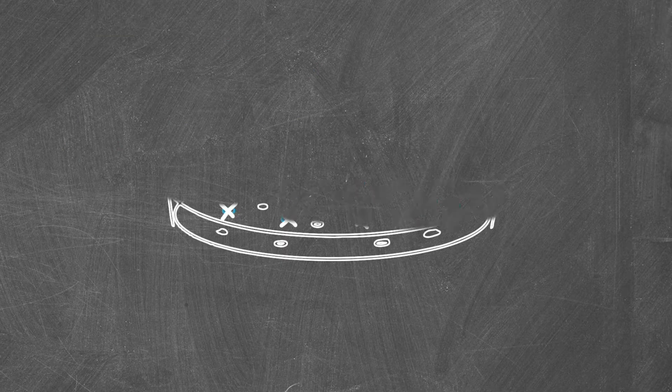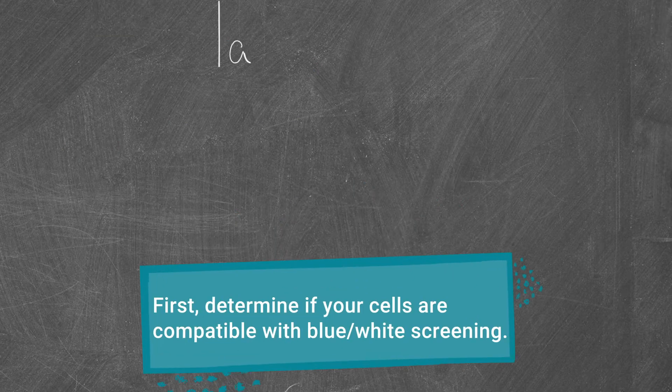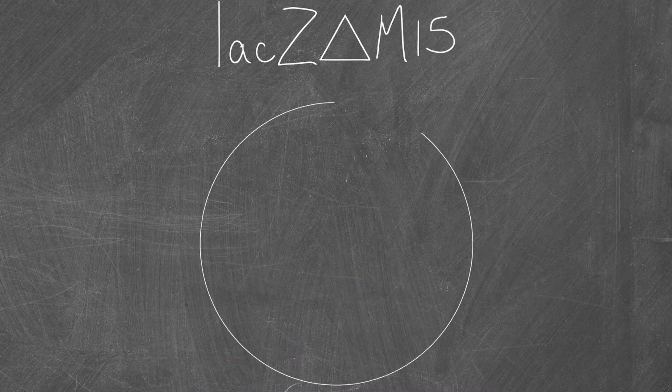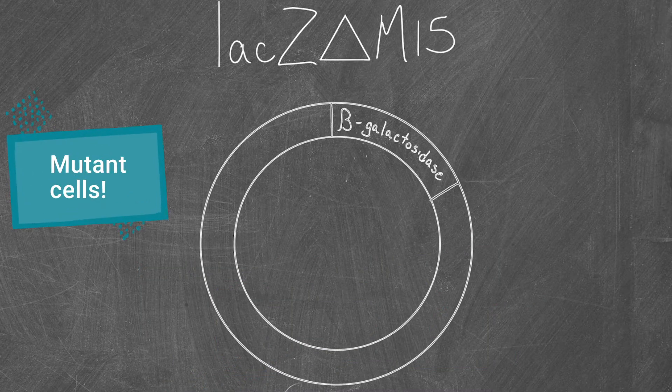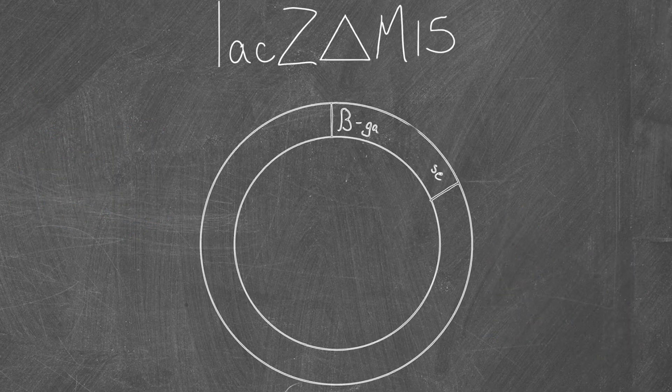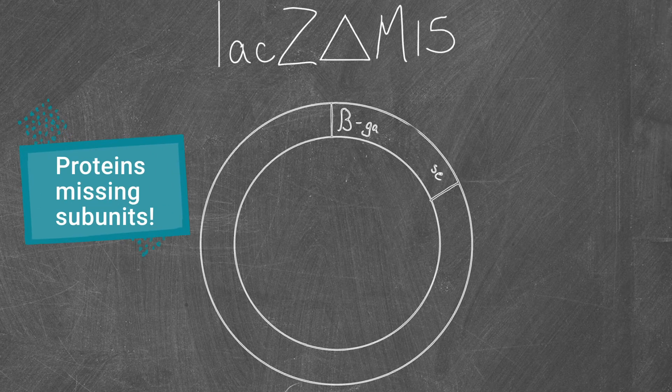To perform blue-white cloning, you'll first need to make sure your competent cells are compatible with the technique. These cells are described as lacZ delta M15, meaning that they carry a mutation that deletes part of the beta-galactosidase, or lacZ gene. This results in a protein that only contains one of its necessary subunits.